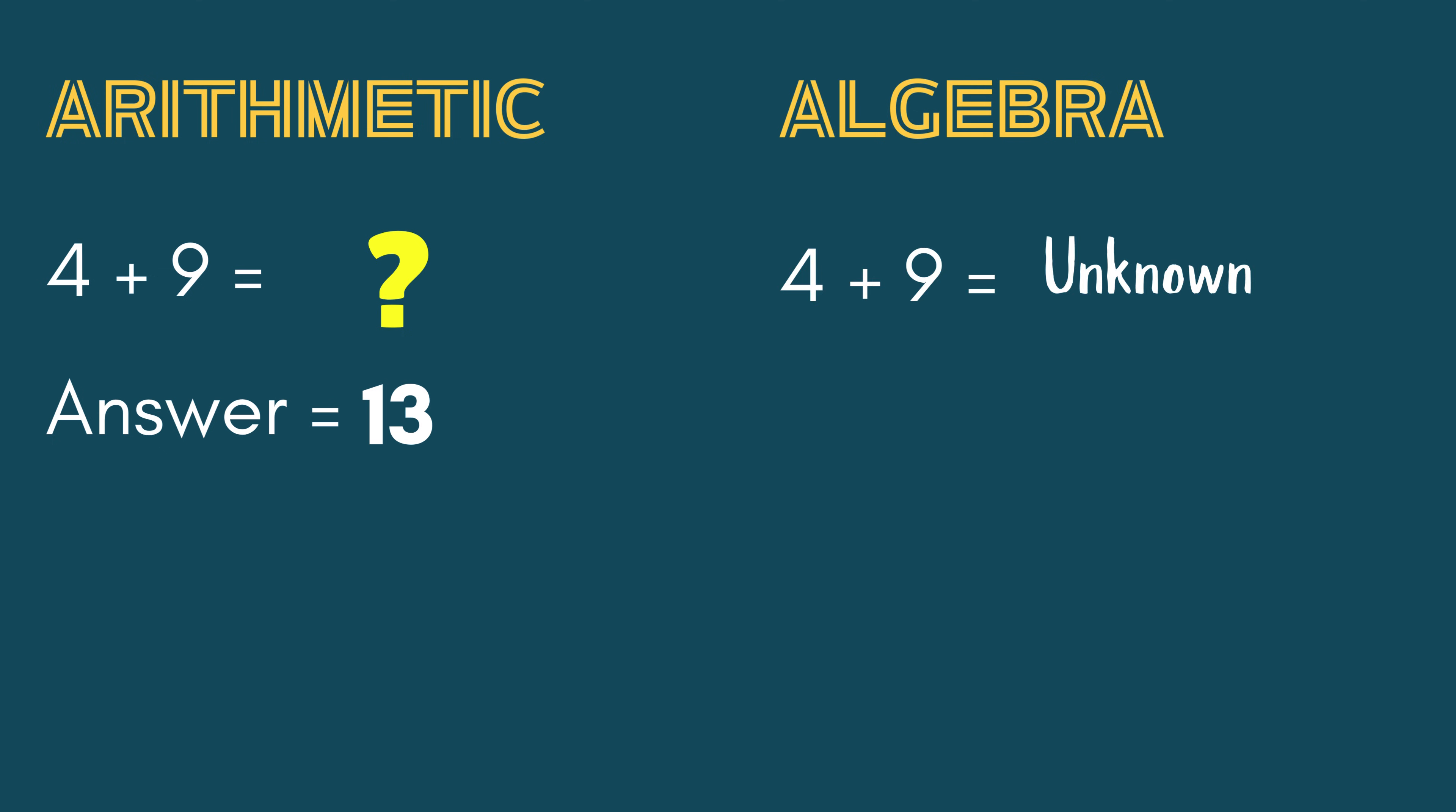But in Algebra, when something is unknown, we give it a symbol in its place. So in this case, we have the unknown, and it is given the popular symbol X.